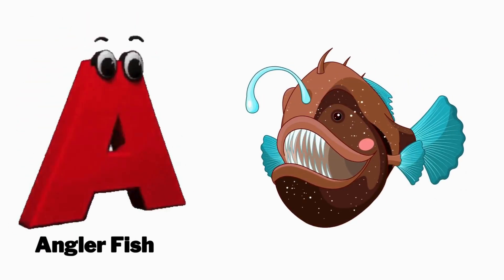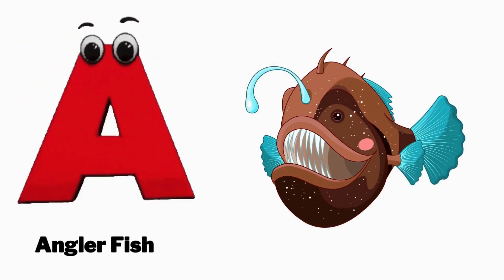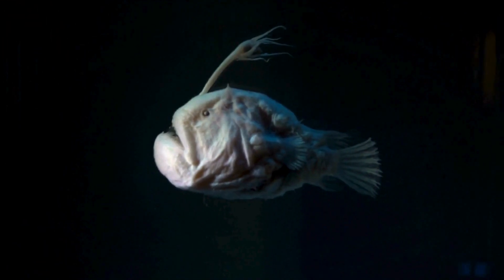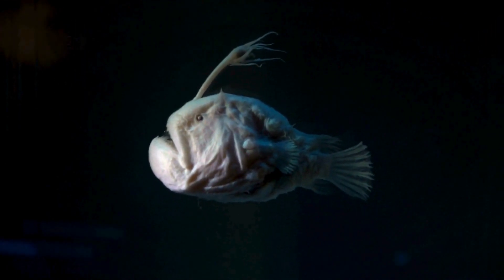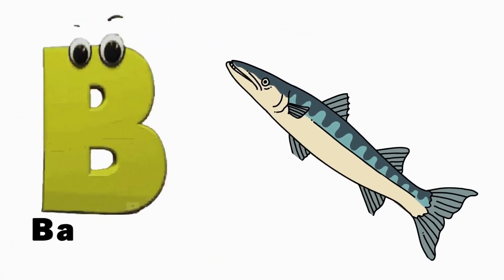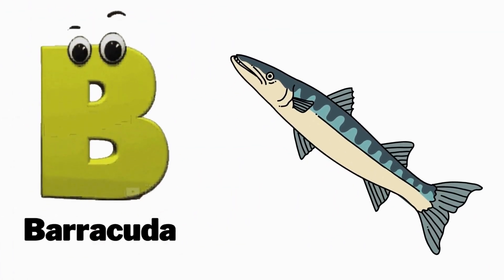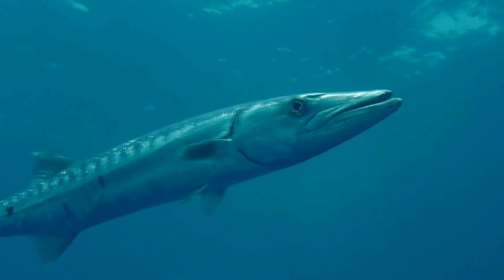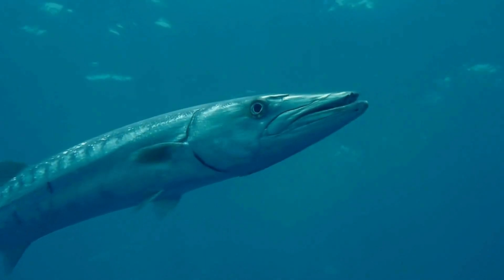E is for anglerfish, anglerfish. B is for barracuda, B, B, barracuda.